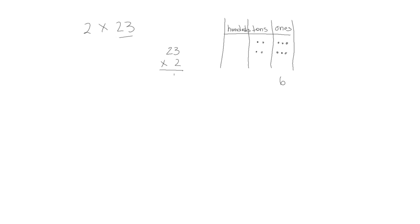That's our first partial product, and we see here we have 4 tens. 4 tens is 40. We're going to record that as our second partial product. When we add them together we get 46 — 40 plus 6 is 46.